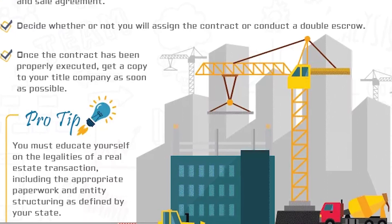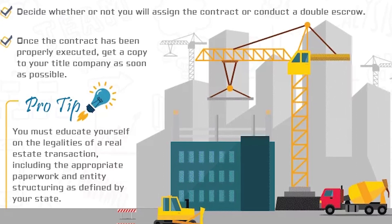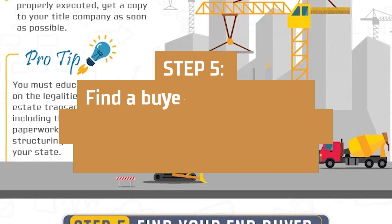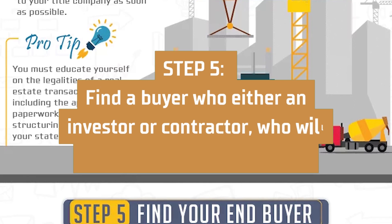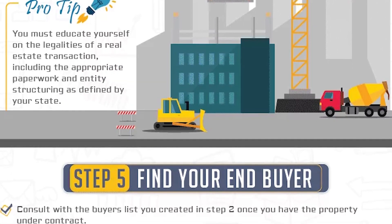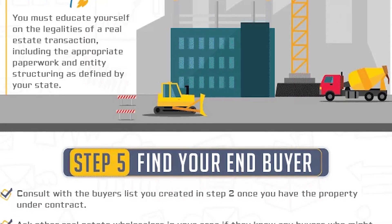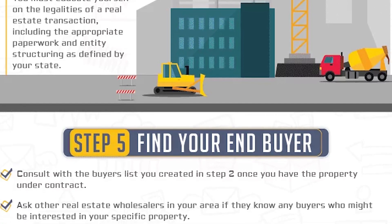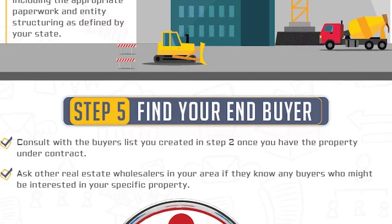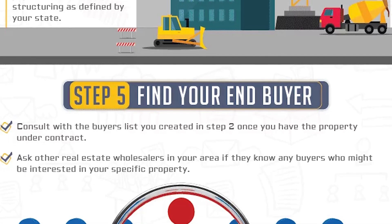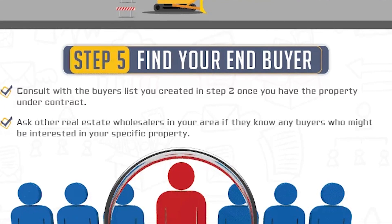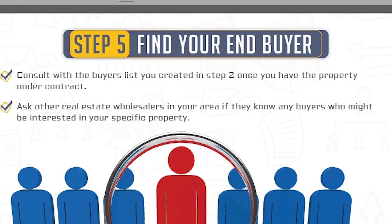Once you have found a property to wholesale and lined up professional vendors, your next step is to find a buyer — either an investor or contractor who will buy and repair the property. Finding a buyer is the beginning of incorporating the contract, and it must be done within a certain time limit. When you are just starting out, you may not have a list of buyers, but some of the most cost-effective ways to find them include advertising on free websites such as Craigslist and Zillow, and distributing flyers with the property information throughout the neighborhood.